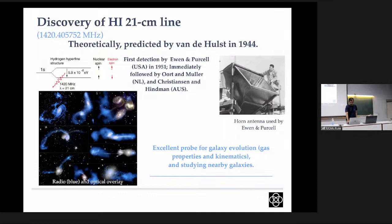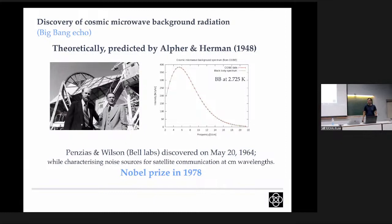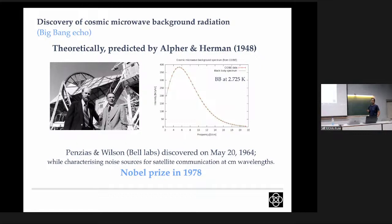The discovery of the Cosmic Microwave Background radiation was theoretically predicted by Alpher and Herman in 1948. The actual detection situation was similar to Jansky's case — Penzias and Wilson were investigating noise in satellite communication systems and ended up detecting the CMB. Its impact on our understanding of the universe and structure formation is well known.